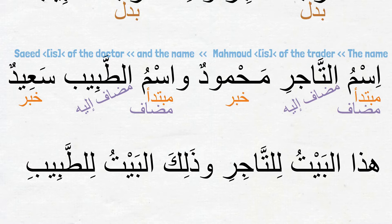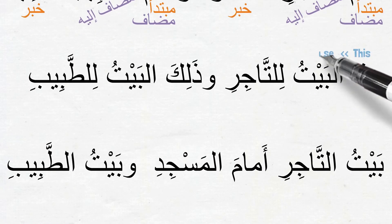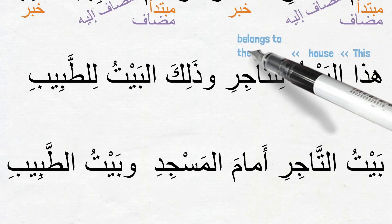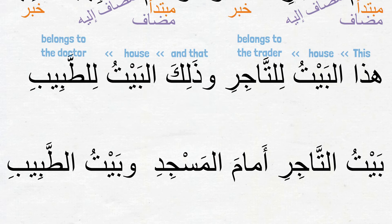Next: هذا البيت للتاجر وذلك البيت للطبيب — This house belongs to the trader and that house belongs to the doctor. Which word is badal here? البيت is the badal in both sentences. They are badal for the أسماء الإشارة coming before them.